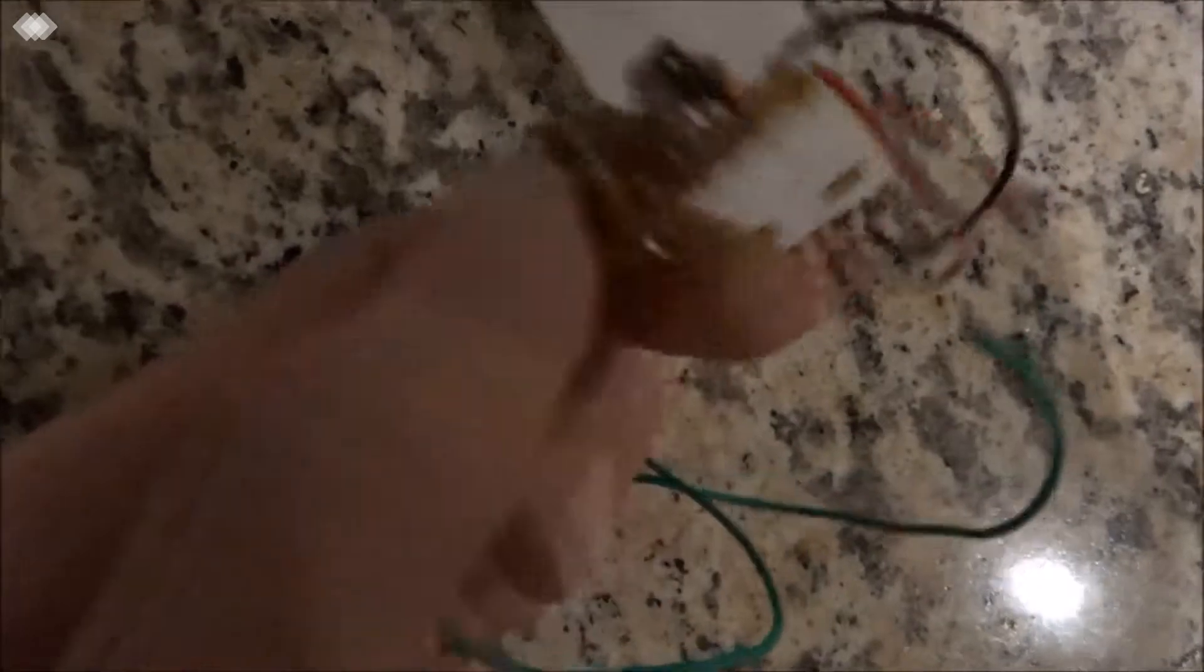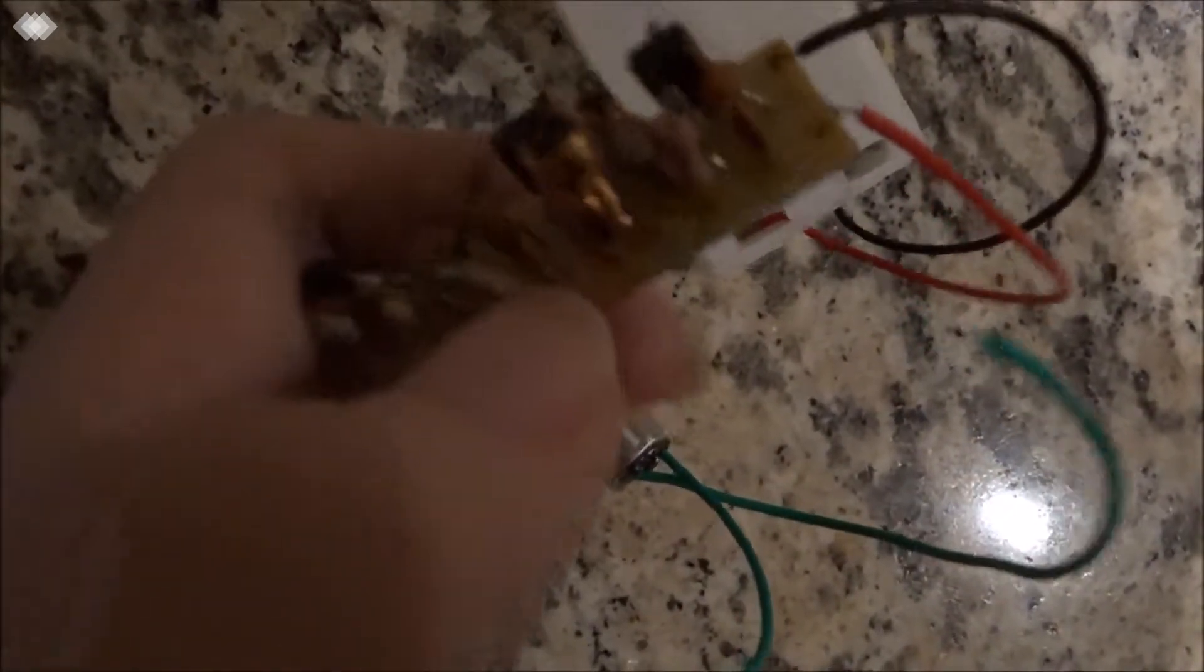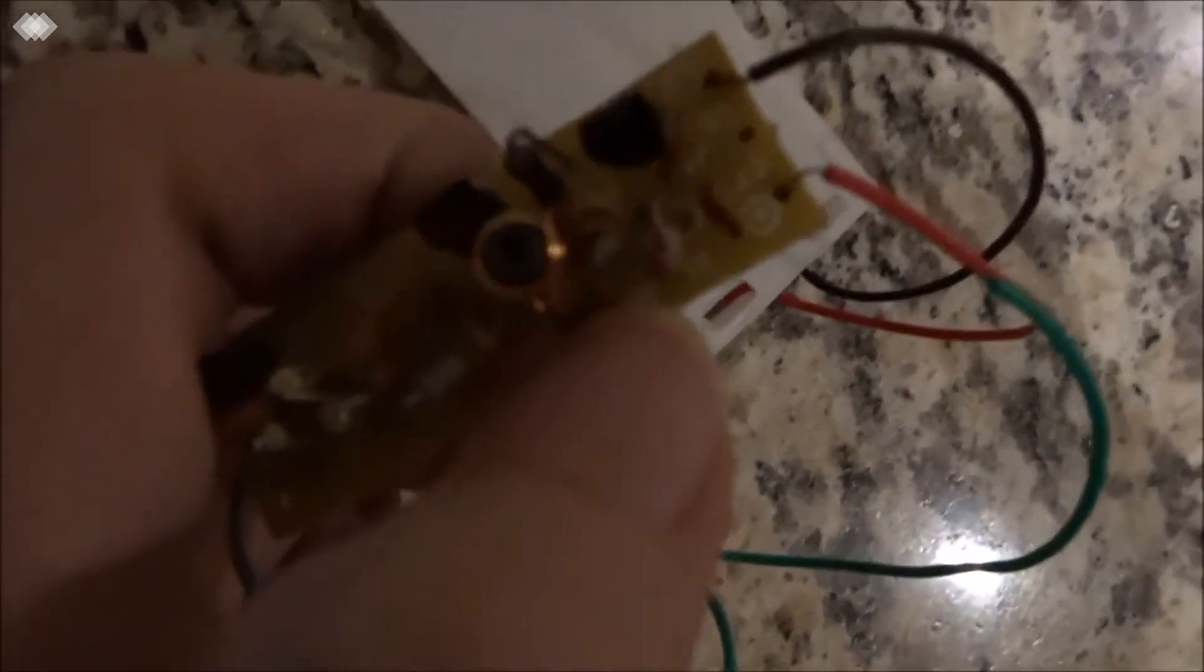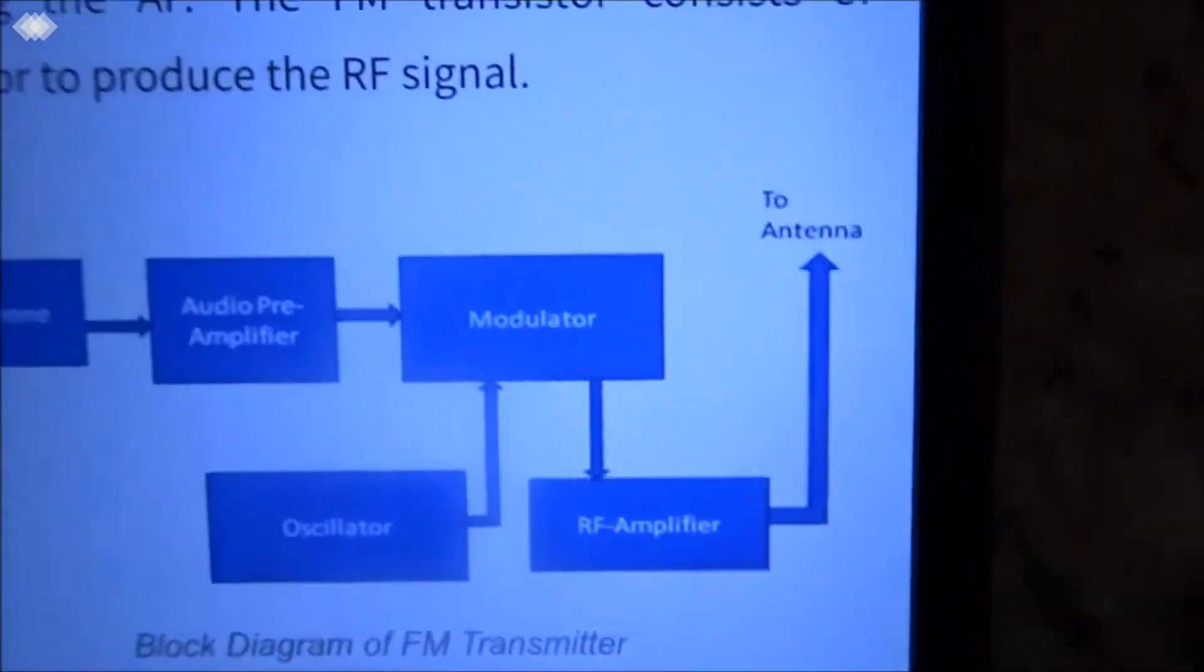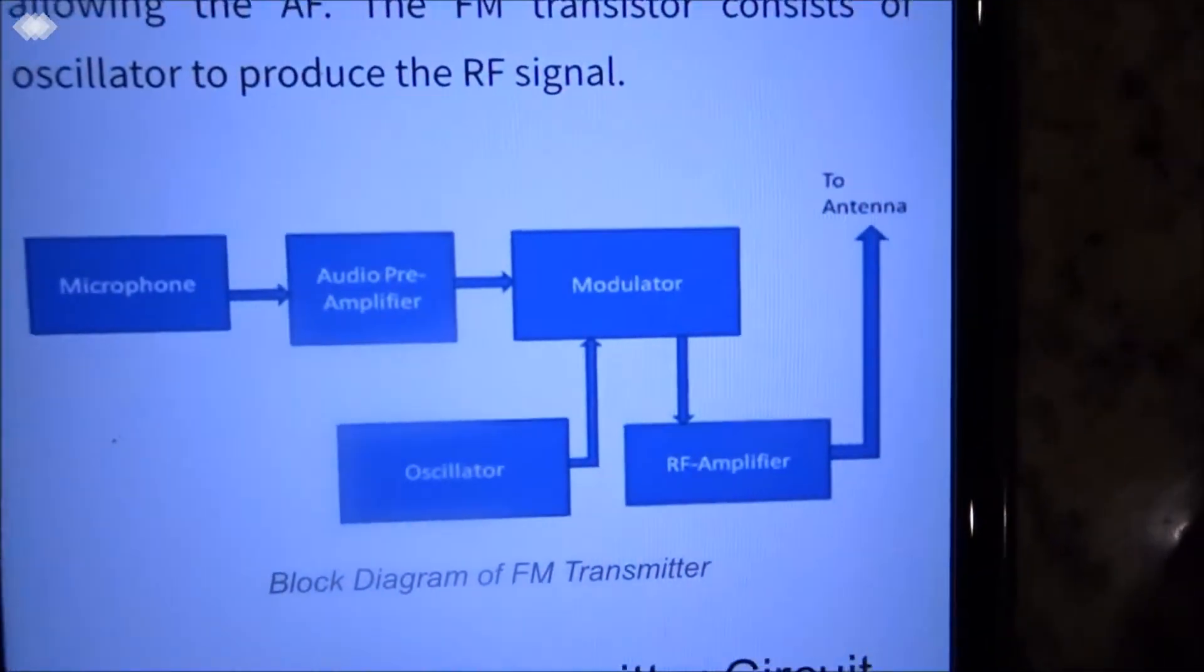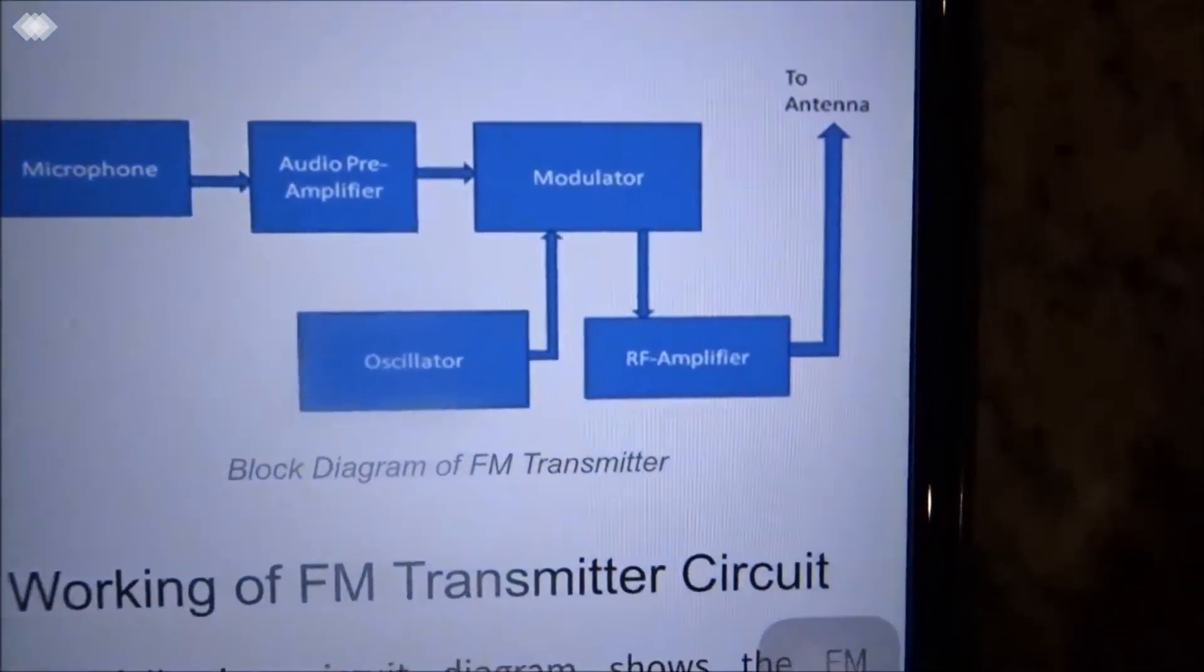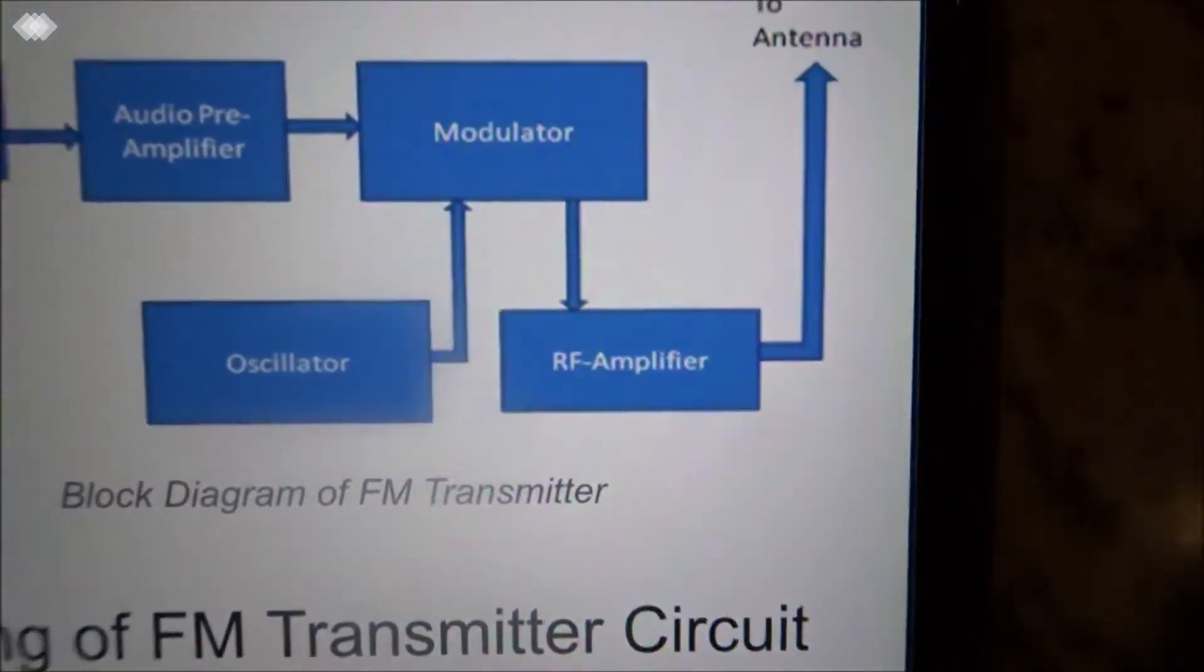The signals go to the modulator, which is here. There's the coil and capacitor. The modulator is used to change the frequency slightly.